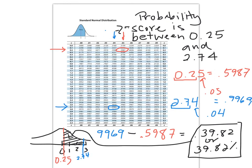So what I'm looking for is the area in between these two z-scores. And that's what I found. That area is about 39.82%.